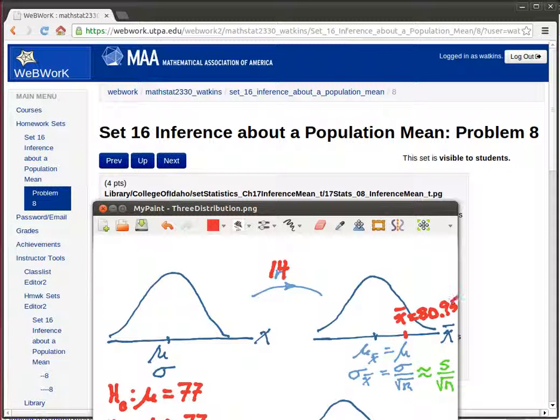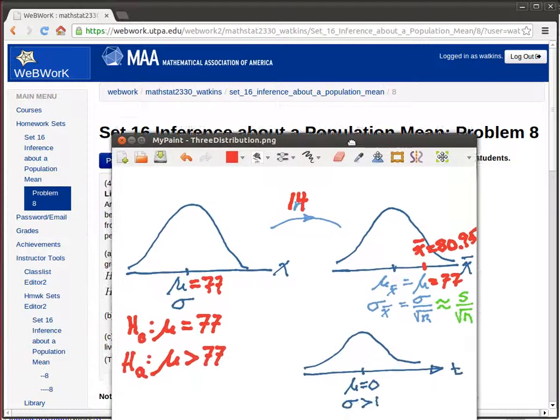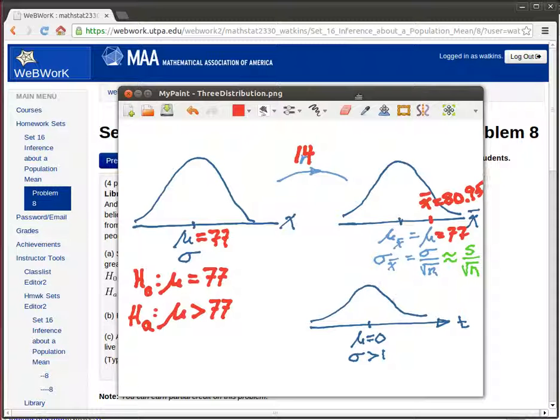And remember, the null hypothesis is saying that the mean is equal to 77. And so this mean over here is 77. Now what we're interested in is how this number shows up in a t-distribution.